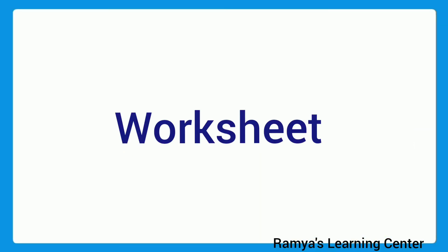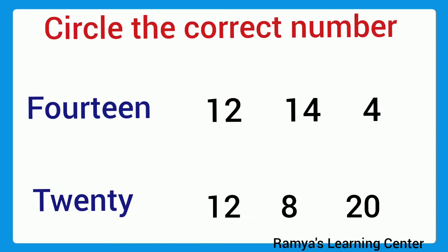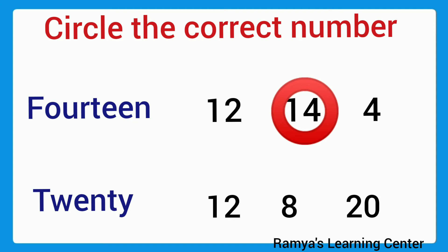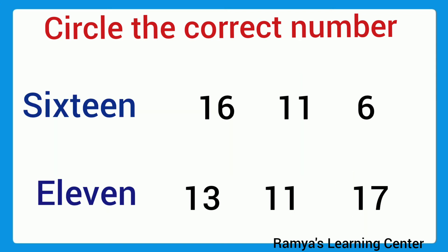Let's do some worksheet. Read the number names and circle the correct number. What is the first number name? Read 14 — circle it. Next, 20 — and circle it.